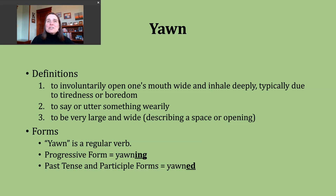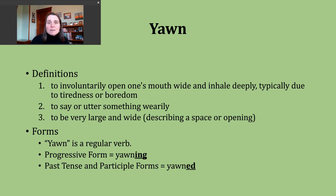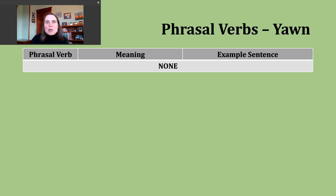It's important to know that yawn is a regular verb. To make the progressive form of this verb, all you need to do is add -ing to form 'yawning.' The past tense and participle forms can be made by adding -ed. Our base verb yawn ends in a voiced sound, which means the -ed ending is just going to make a D sound, so we're not going to add an extra syllable. It should sound just like this: yawned. You'll also be happy to know there are no additional phrasal verbs to study.